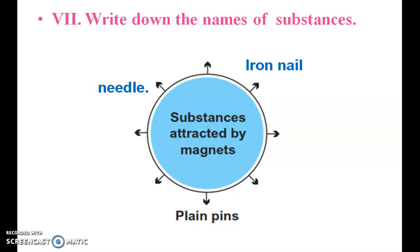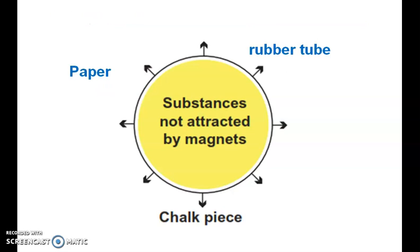Write down the names of some substances attracted by magnets: plain pins, needle, iron nail. There are many magnetic elements — iron, cobalt, nickel, and others. Substances not attracted by magnets: paper, rubber, chalk piece, pencil, etc.